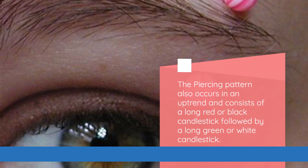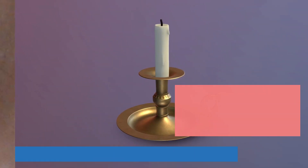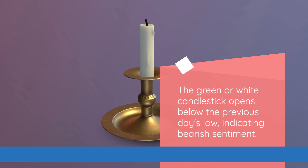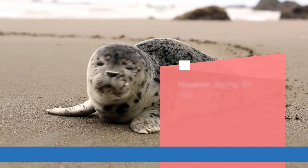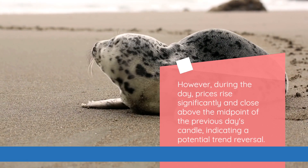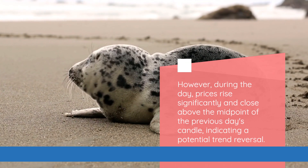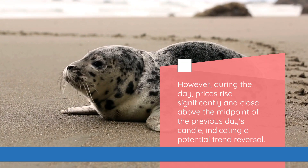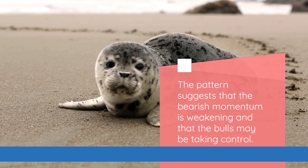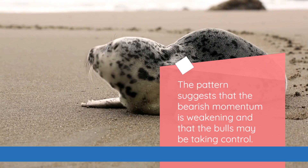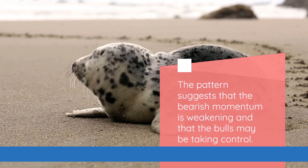The piercing pattern also occurs in an uptrend and consists of a long red or black candlestick followed by a long green or white candlestick. The green or white candlestick opens below the previous day's low, indicating bearish sentiment. However, during the day, prices rise significantly and close above the midpoint of the previous day's candle, indicating a potential trend reversal. The pattern suggests that the bearish momentum is weakening and that the bulls may be taking control.